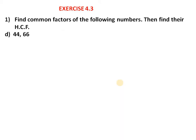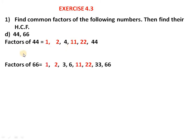Part D is also easy. Factors of 44: 1 × 44, 2 × 22, 4 × 11. Now factors of 66: 1 × 66, 2 × 33, 3 × 22, and 6 × 11.